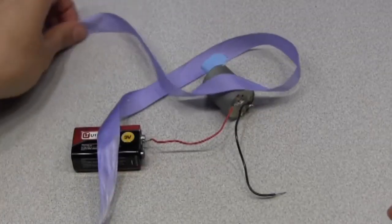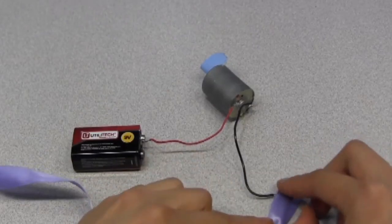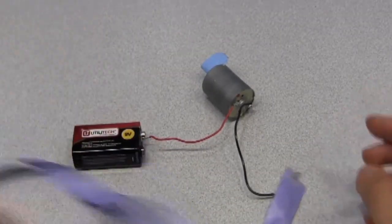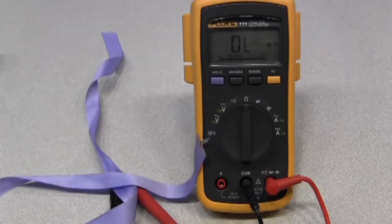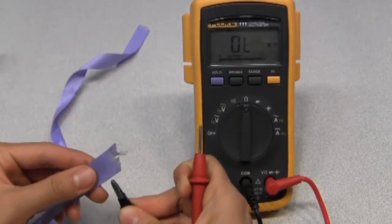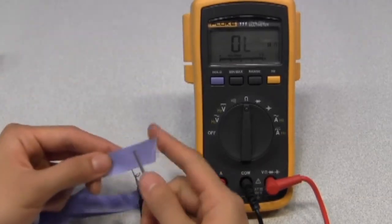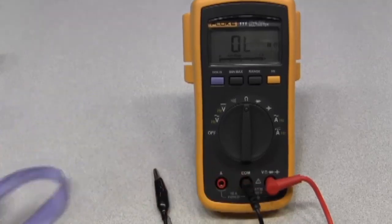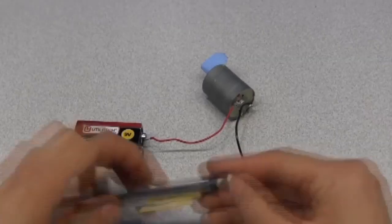Can we build circuits with things other than wire? Let's try it with this ribbon. Nope, doesn't work. We can use a multimeter to measure the resistance of the ribbon, which tells us how well it conducts electricity. The OL means that the resistance is too high for the meter to measure.